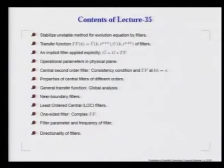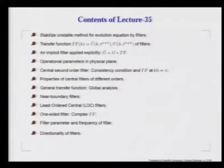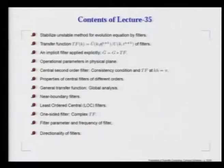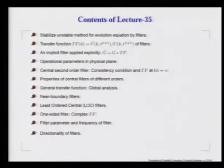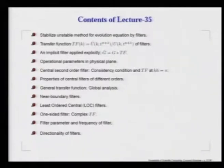Lecture 35 continues our discussion on stabilizing effects of filters. We can pick up any unstable method and design a filter such that we have a stable method. The property of filters is defined in terms of what we call a transfer function, which is the quotient of the Fourier-Laplace amplitude after and before filtering. This implicit filter, applied in explicit manner, alters the numerical amplification factor G by convolution with the transfer function to give an altered numerical amplification factor upon filtering, and we try to figure out the operational parameters in the physical plane itself.